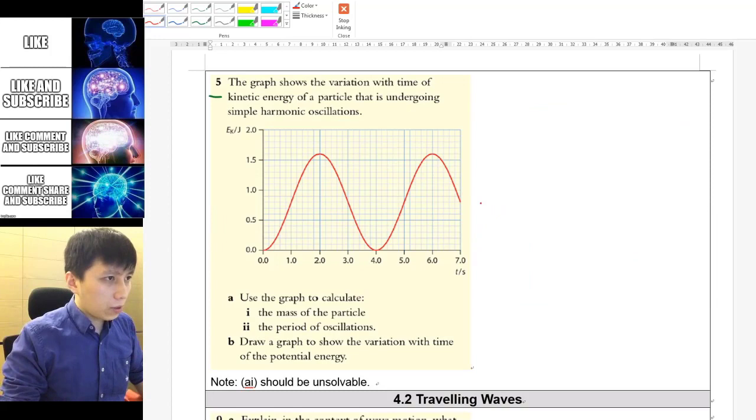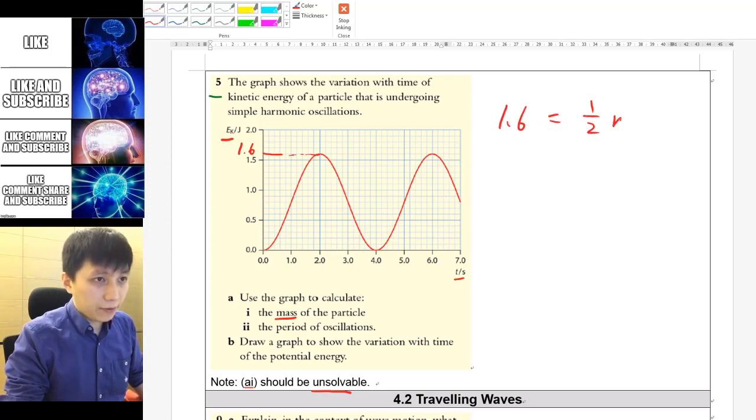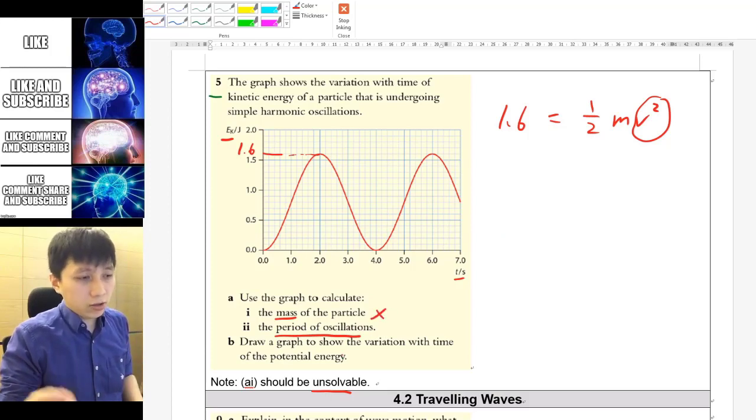Question number five. So here we've got kinetic energy over time graph. And the first question is asking you the mass, but I think it is not solvable because the best thing you can get is the maximum of kinetic energy, which is 1.6. So you can say 1.6 joule equals half mv squared, but then you don't know the velocity. So I don't think you can find it out even if you know period which is in part two. So part one is actually not solvable.